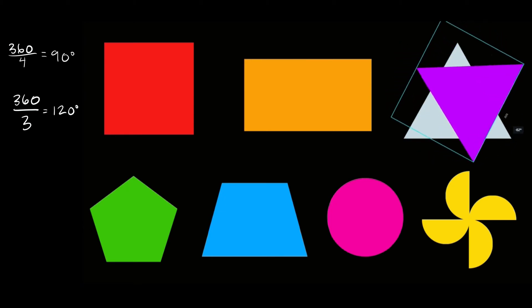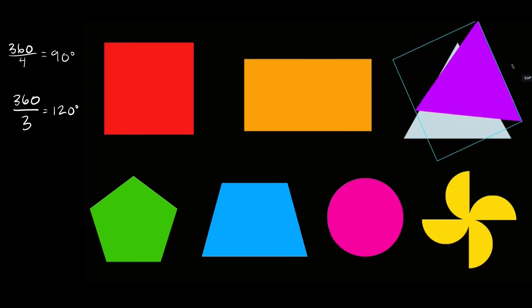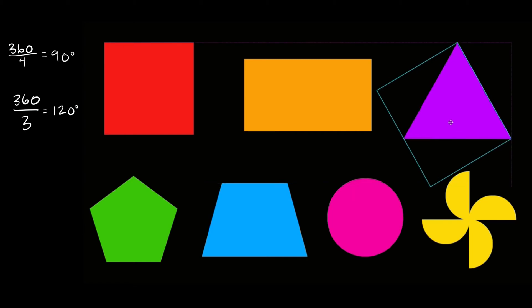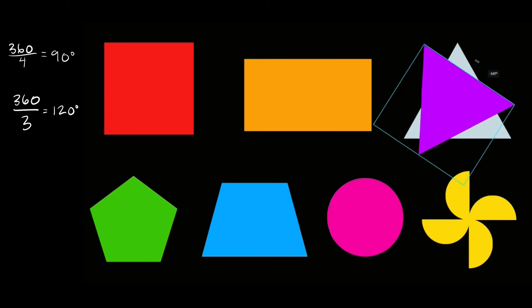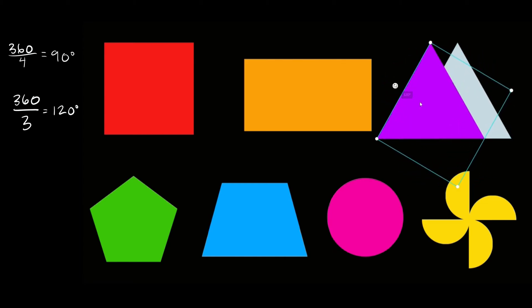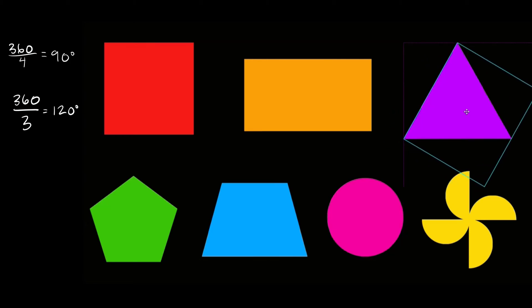So if I rotate this thing 120 degrees — right there — again, it came off a little bit because I'm not rotating it from the center, but if I move it back, you can see it matches up exactly to where it started. And then again, if I rotate it another 120 degrees — so a total of 240 degrees — right there, you can see it matches up with where it started. So this equilateral triangle also has rotational symmetry.